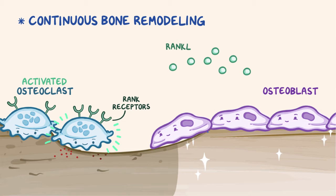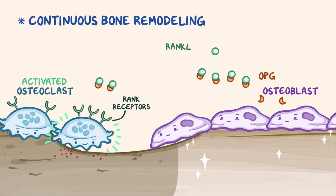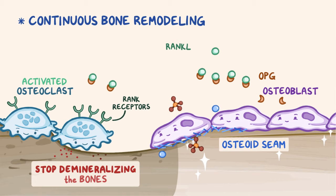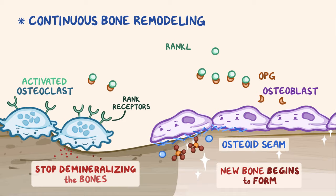Once there's been sufficient bone demineralization, the osteoblasts secrete another substance called osteoprotegerin, or OPG for short, which binds RANKL and prevents it from activating the RANK receptors. This causes the osteoclasts to stop demineralizing the bones. Once that happens, the osteoblasts start secreting a substance called osteoid seam, which is mainly made up of collagen and acts like a scaffold upon which calcium and phosphate can get deposited. And that's how new bone begins to get formed again.